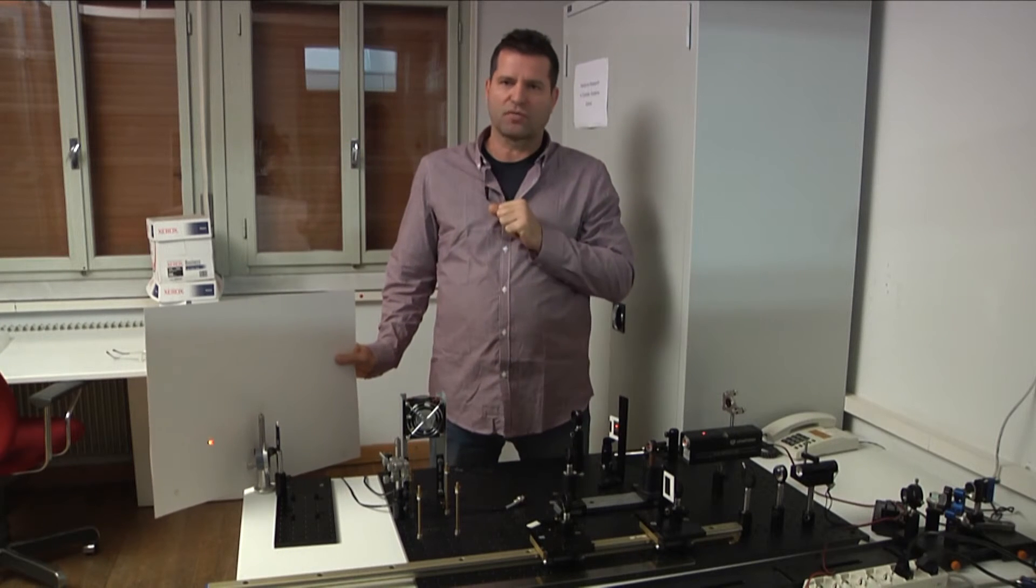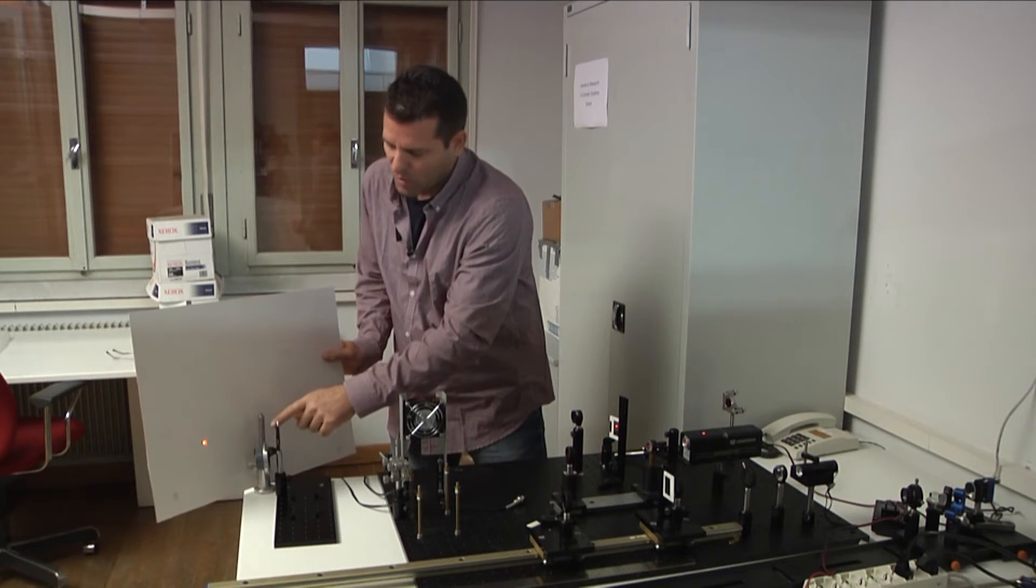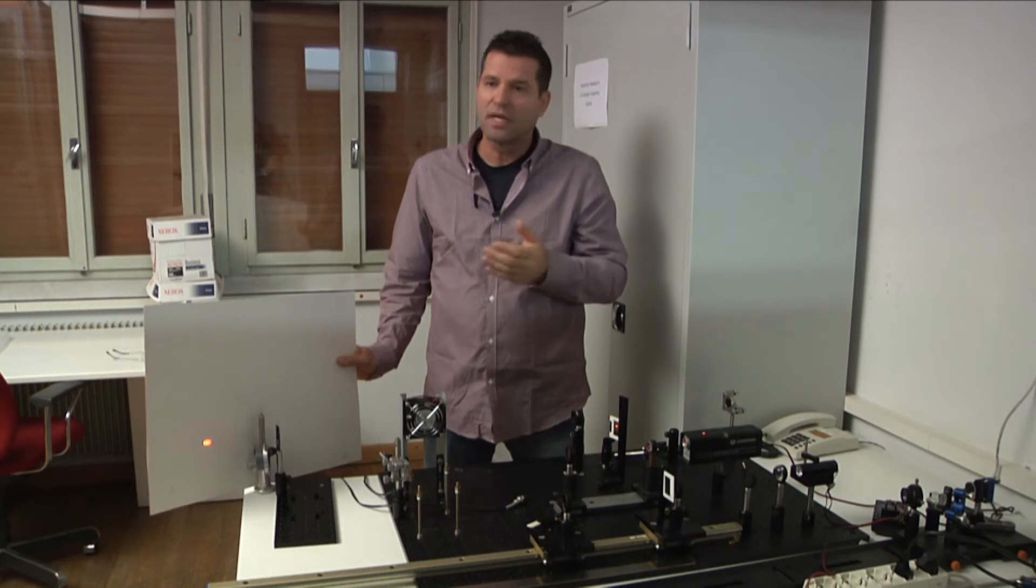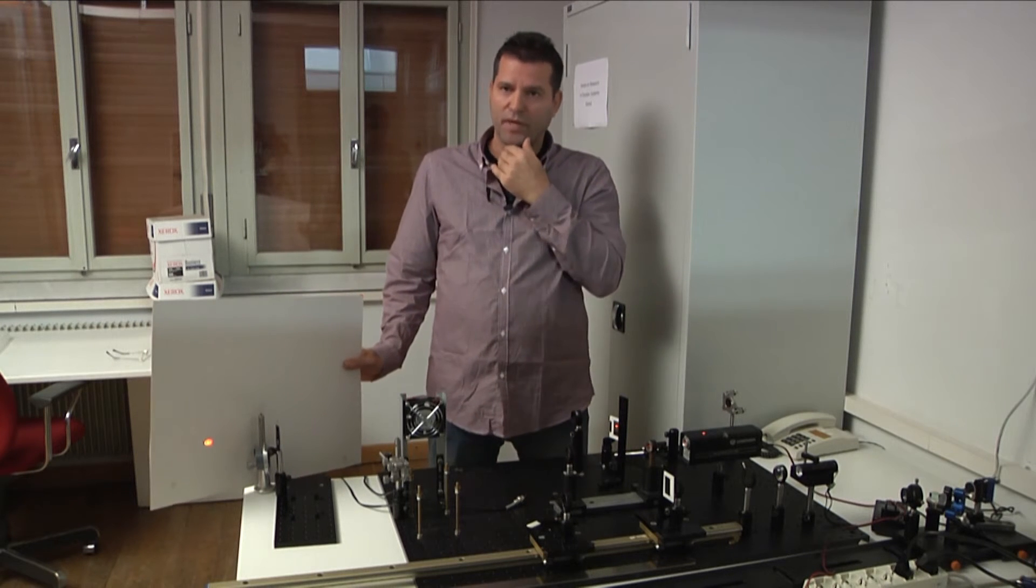And they will see that when we have only the zero order, the central order, there is no image formation there. But when we have different orders, for example, the first orders and the second orders, a clear image will be created there.